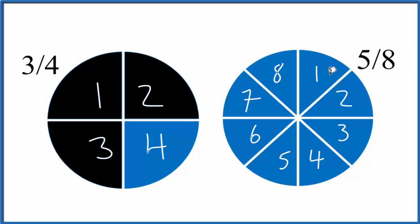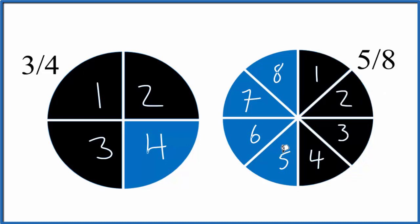Over here, we'll shade in five. 1, 2, 3, 4, 5, and that's 5 eighths.